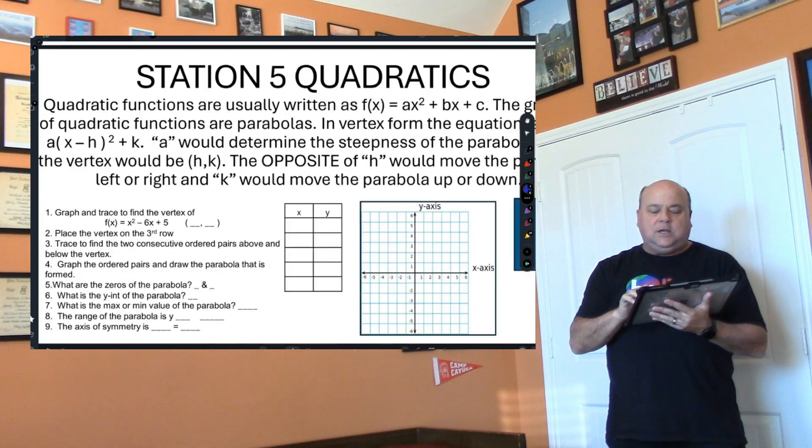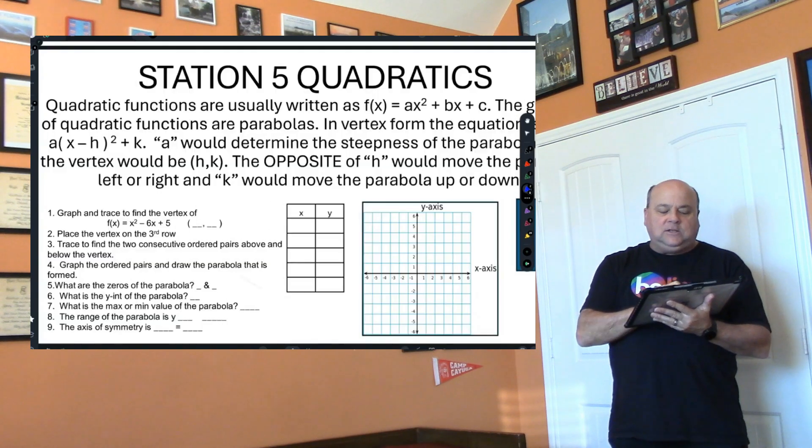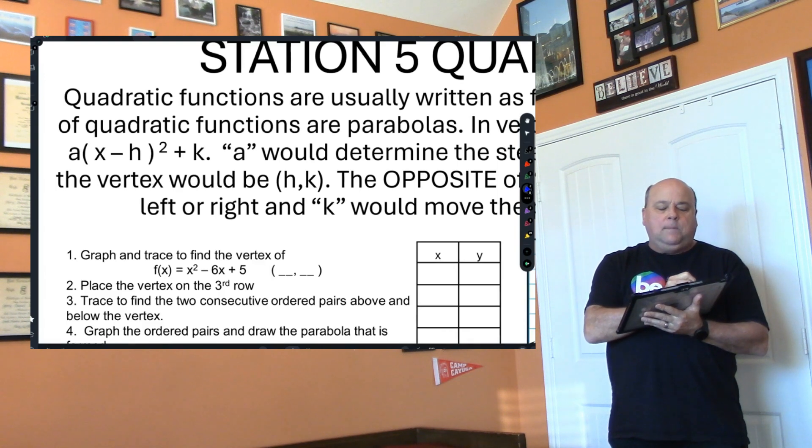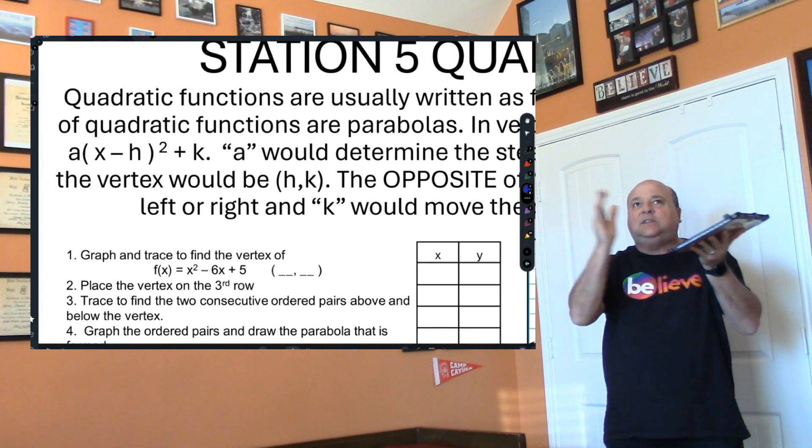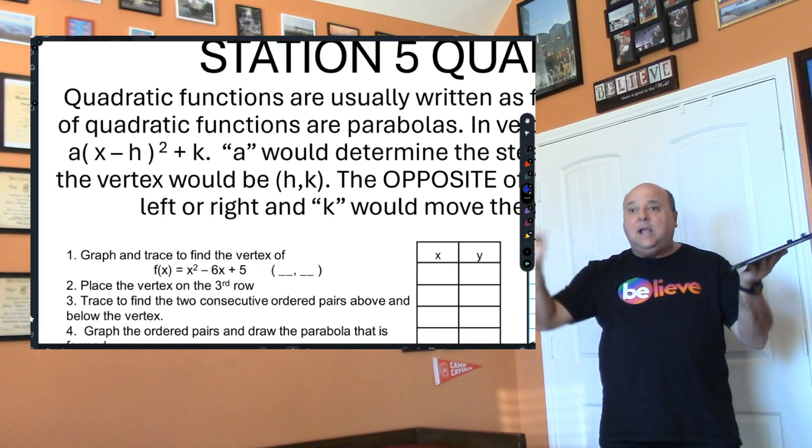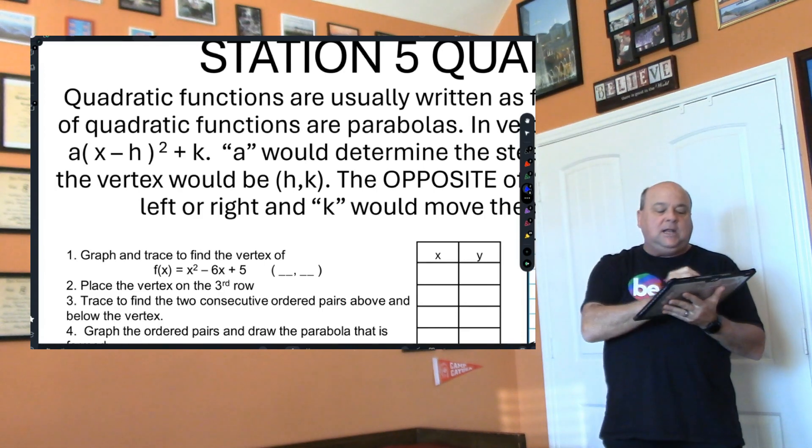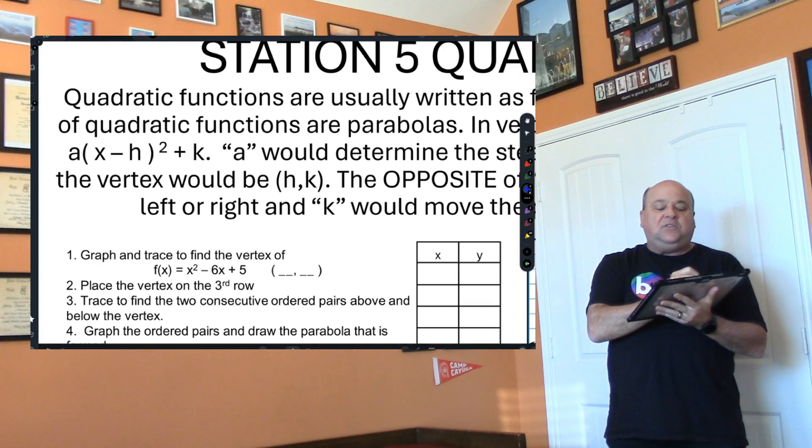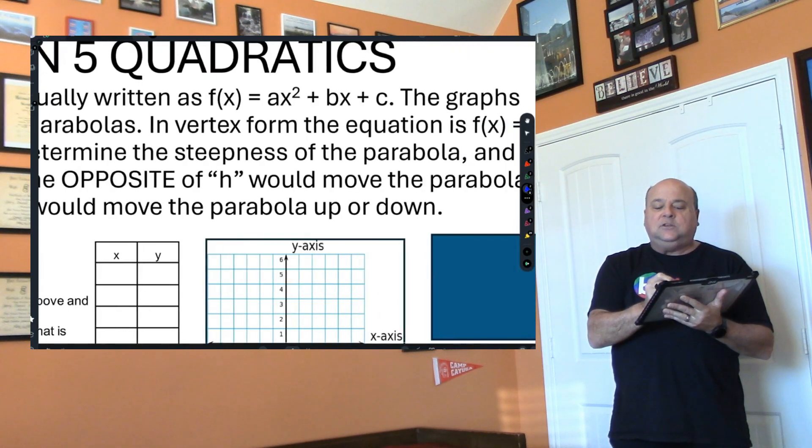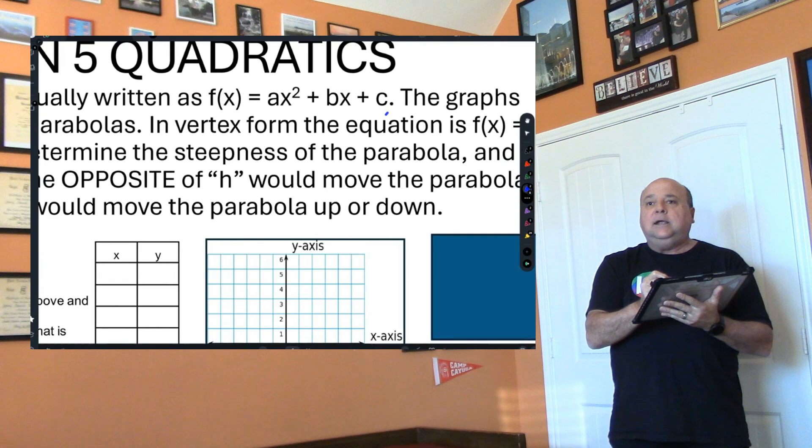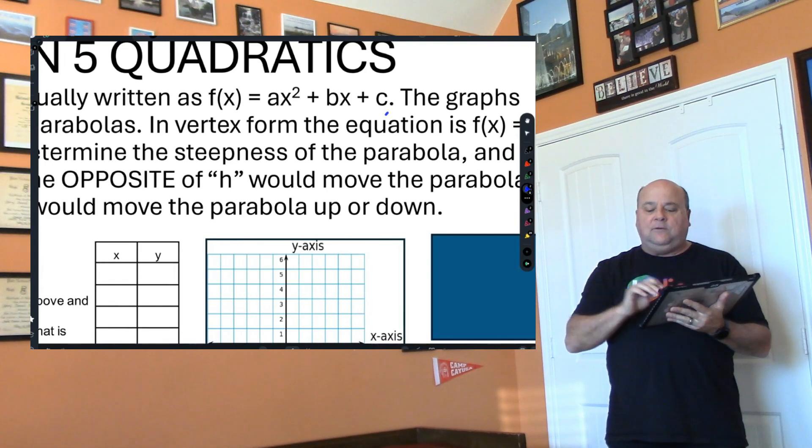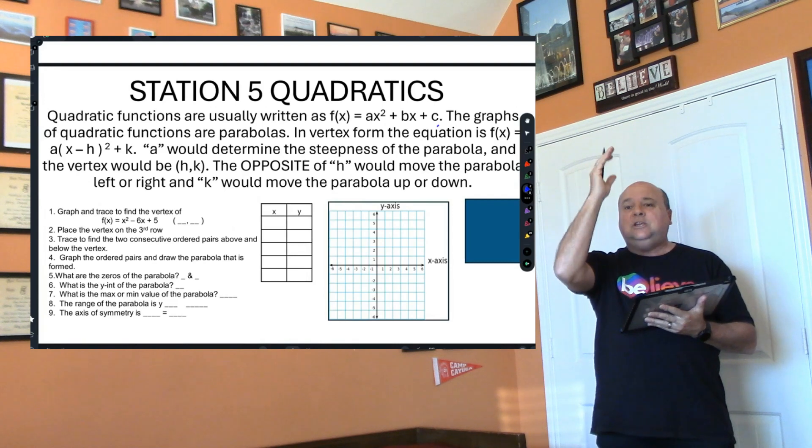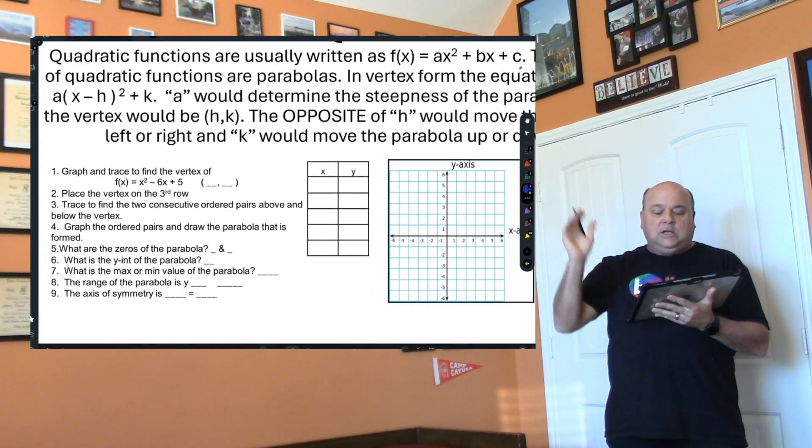You need to know the key parts of a parabola and what happens when you change them. I'm going to zoom in here real quick. See this part right here? Remember the a makes it thinner or wider, and if it's negative it flips it. The h goes left or right, the k goes up or down, but the h is opposite. The c is going to be your y-intercept every time.